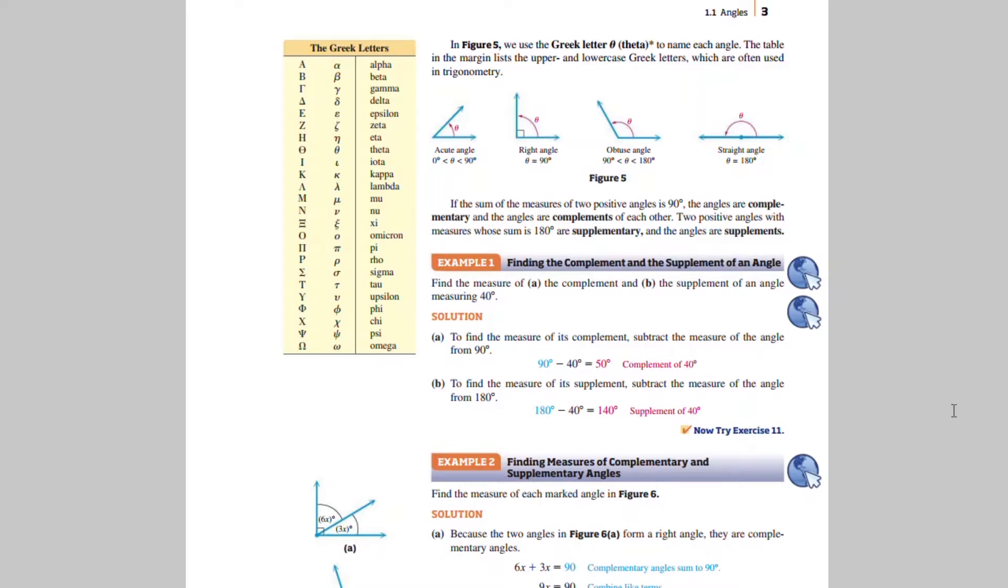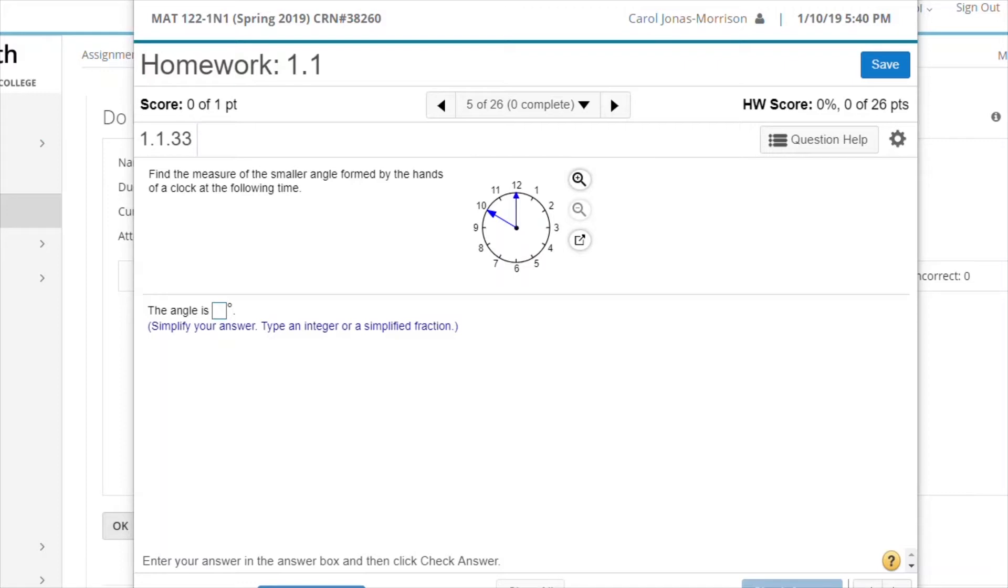When you're in MyMathLab, I want you to notice that MyMathLab gives you a lot of information. It's asking you to do a specific problem. It's telling you how many points the homework is out of, which homework it is. And this refers to Chapter 1, Section 1, Problem 33 in your textbook.